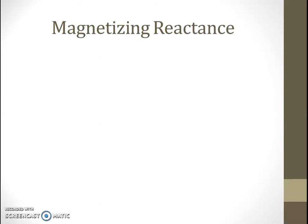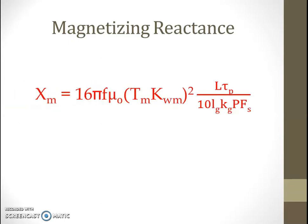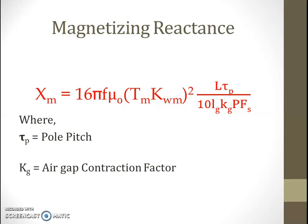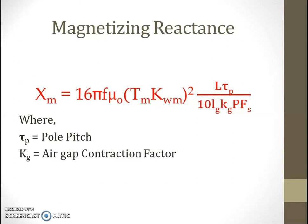Magnetizing reactance X_m is given by the equation: 16π·f·μ₀·T_m·K_wm²·L multiplied by τ_p, divided by tan(l_g·K_g·p·f_s), where τ_p is the pole pitch, K_g is the air gap contraction factor, l_g is the length of air gap, and f_s is the saturation factor.